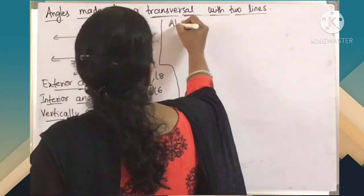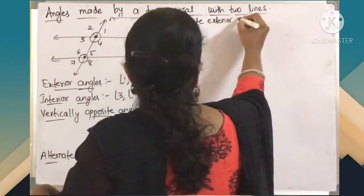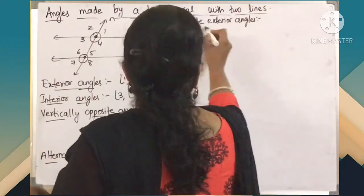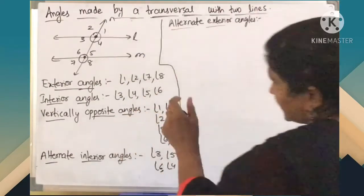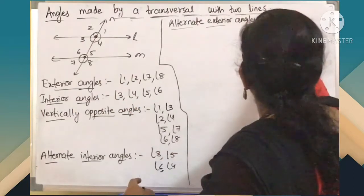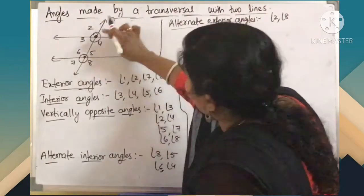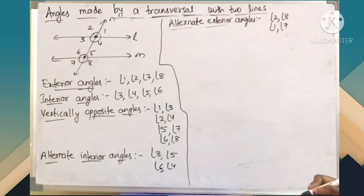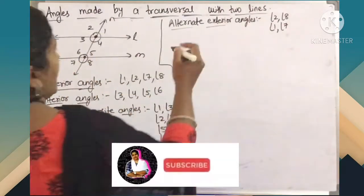Next, alternate exterior angles. Here we should consider only exterior angles. Both should be exterior, they should not be adjacent, and they should be on either side of the transversal. Angle 2 and angle 8 form one pair of alternate exterior angles, and angle 1 and angle 7 form another pair. So totally we get 2 pairs of alternate exterior angles.